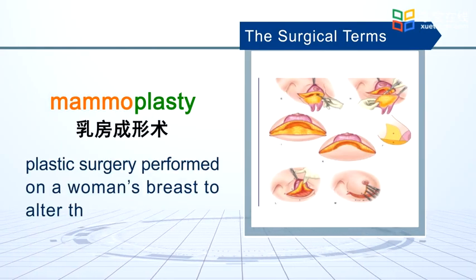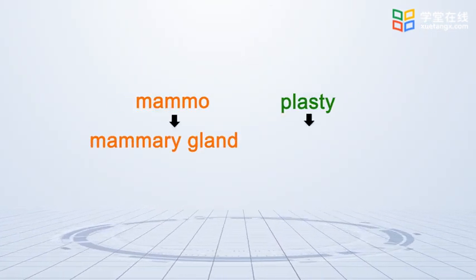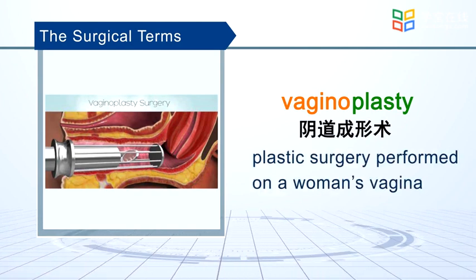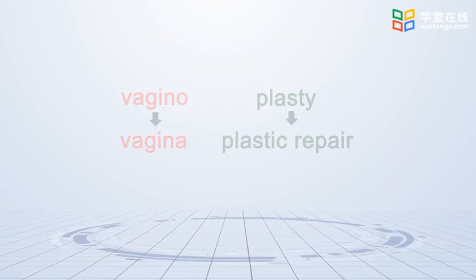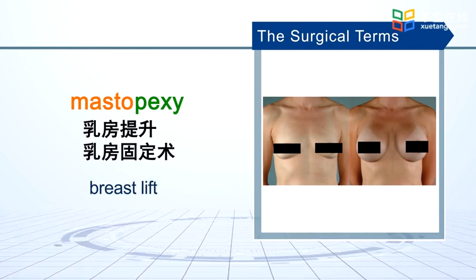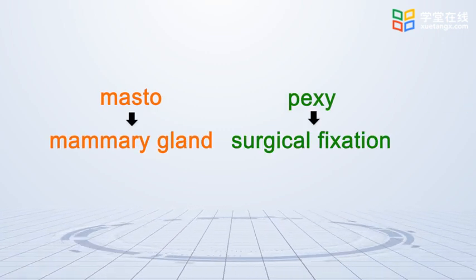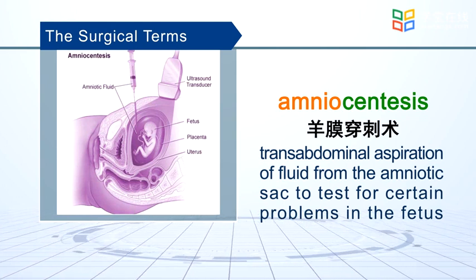Mammoplasty: plastic surgery performed on a woman's breast to alter the shape or size. Vaginoplasty: plastic surgery performed on a woman's vagina. Mastopexy: breast lift. Amniocentesis: transabdominal aspiration of fluid from the amniotic sac to test for certain problems in the fetus.